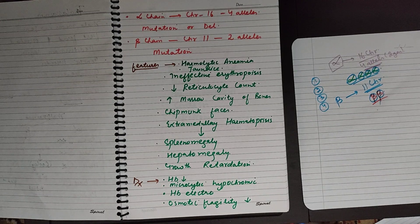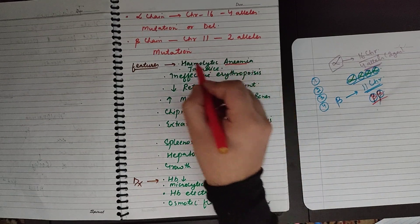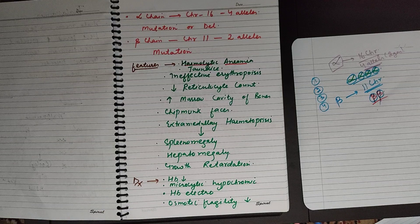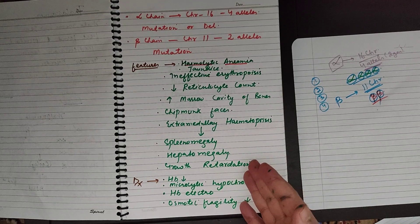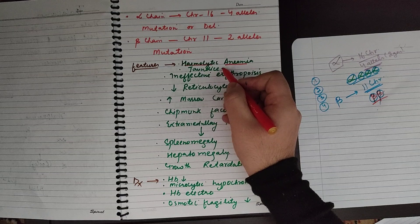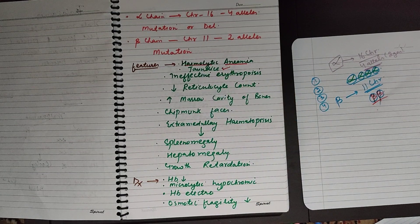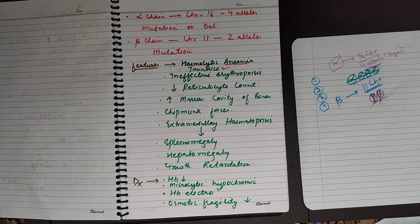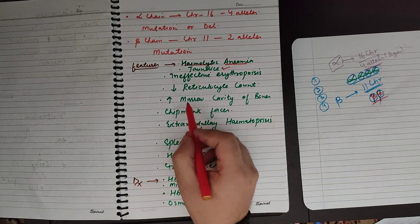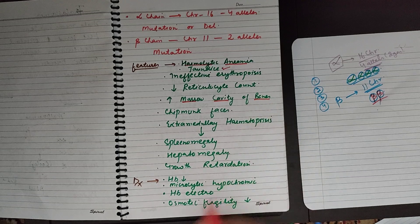What are the features of a person suffering from thalassemia? Since the hemoglobin chains are defective, RBCs will be unstable. When RBCs are unstable, it results in hemolytic anemia — the RBCs are going to be destroyed either within the blood vessel or within the spleen. There will be hemolytic anemia, and when excess RBCs are destroyed, more bilirubin will be produced, resulting in jaundice.